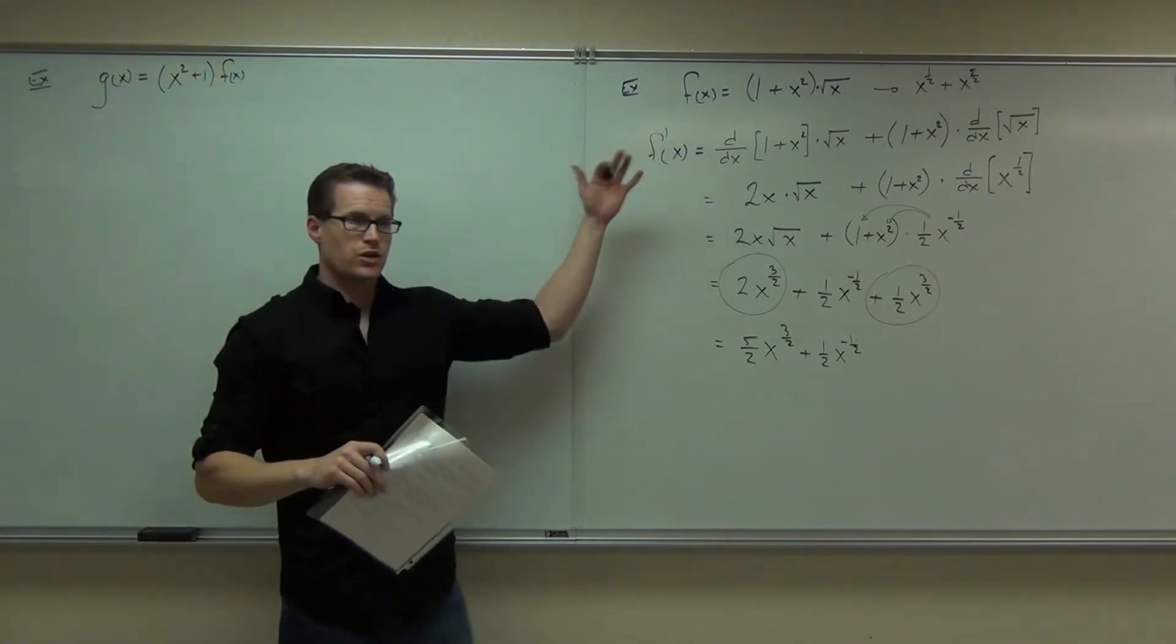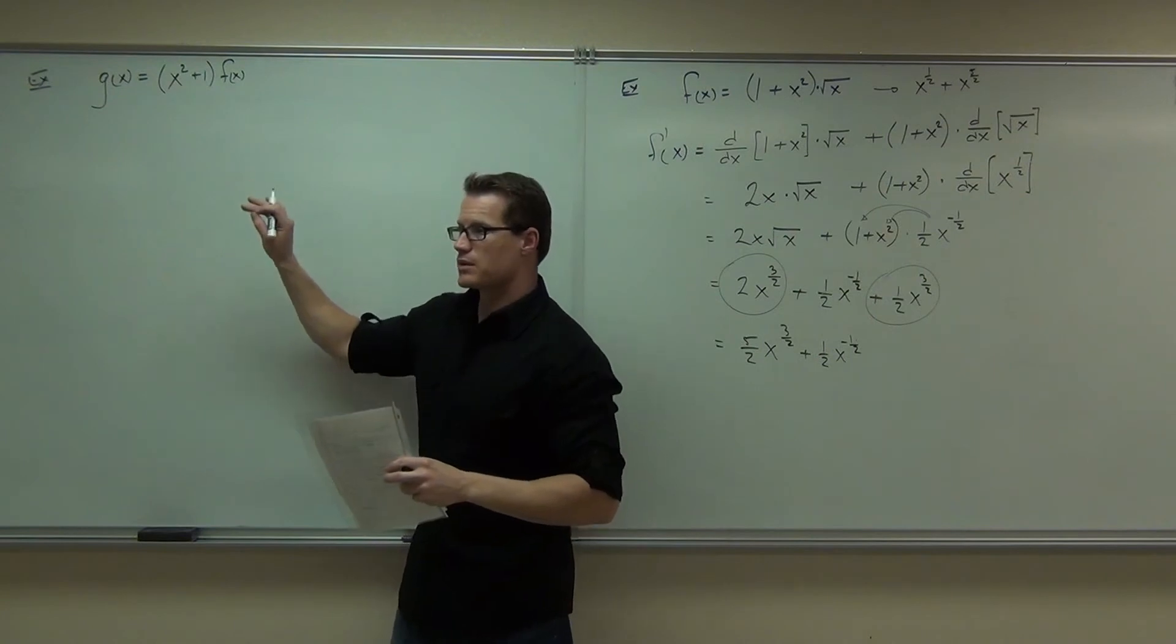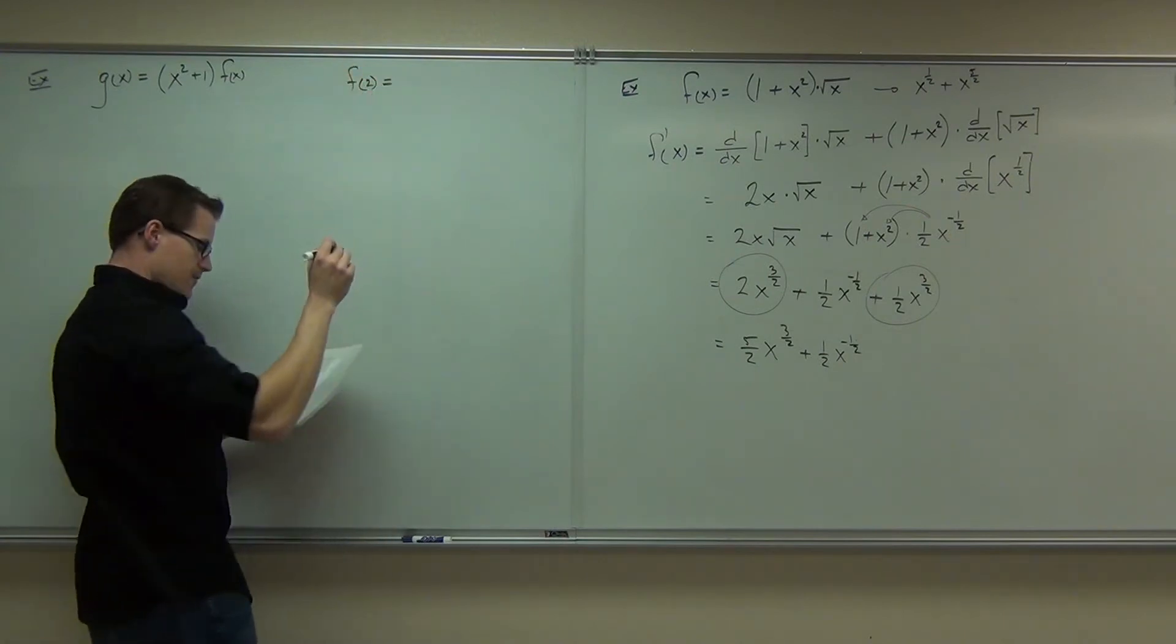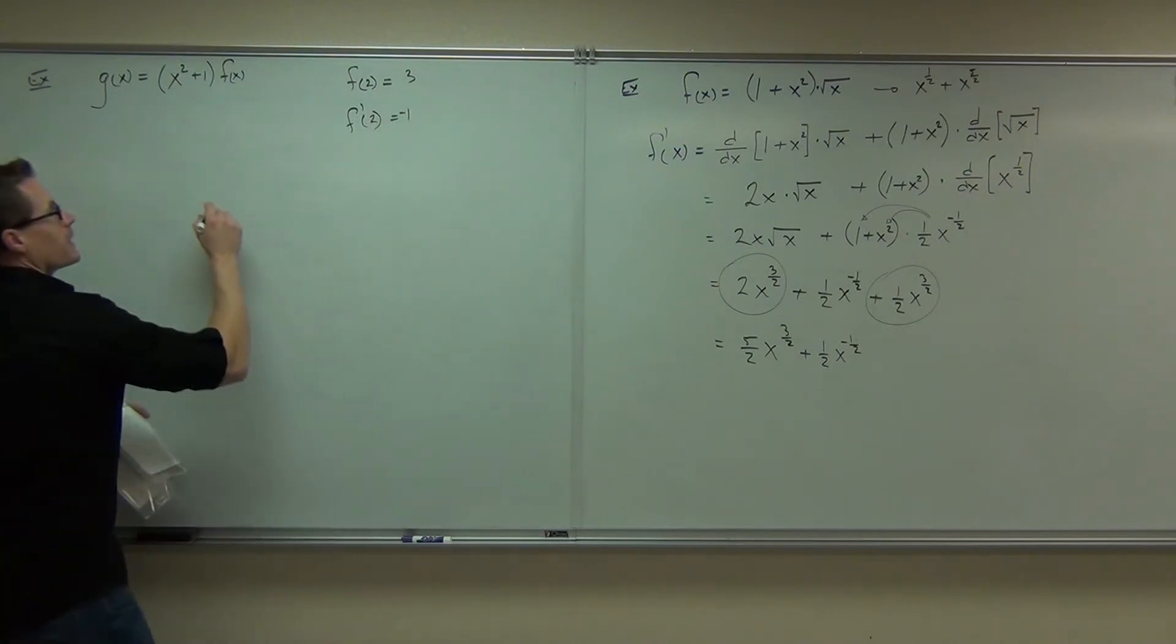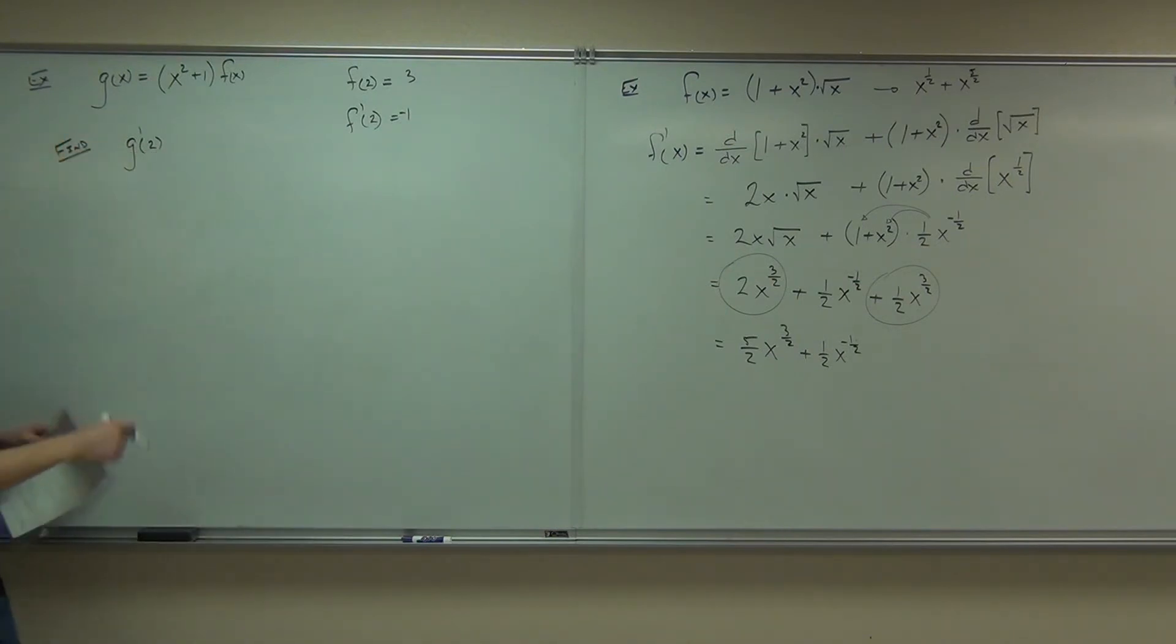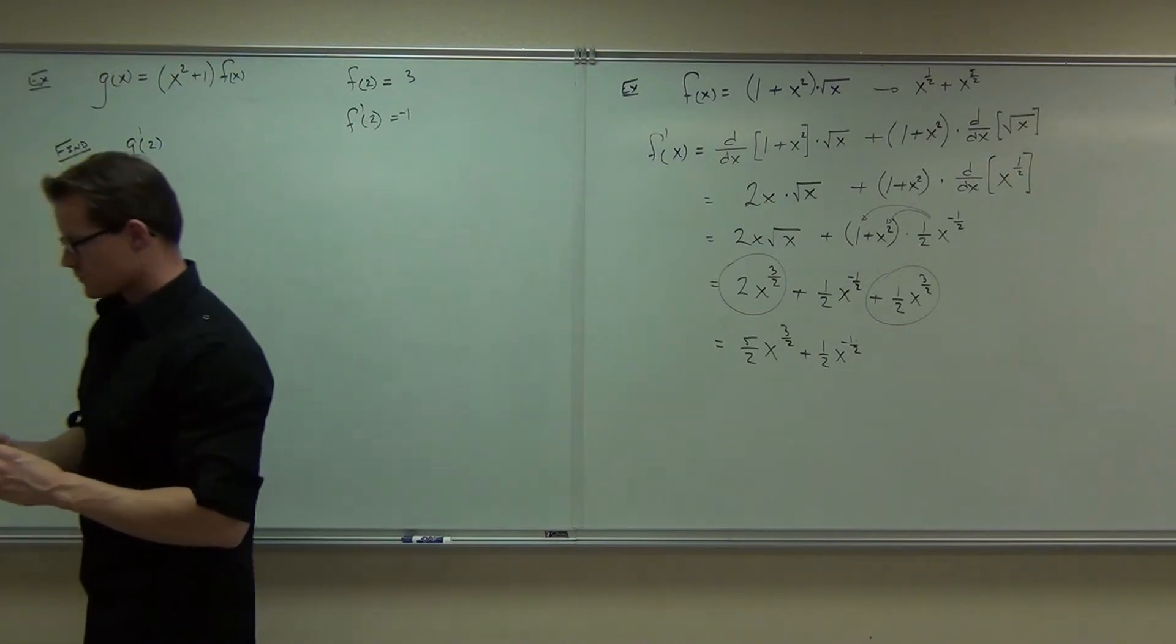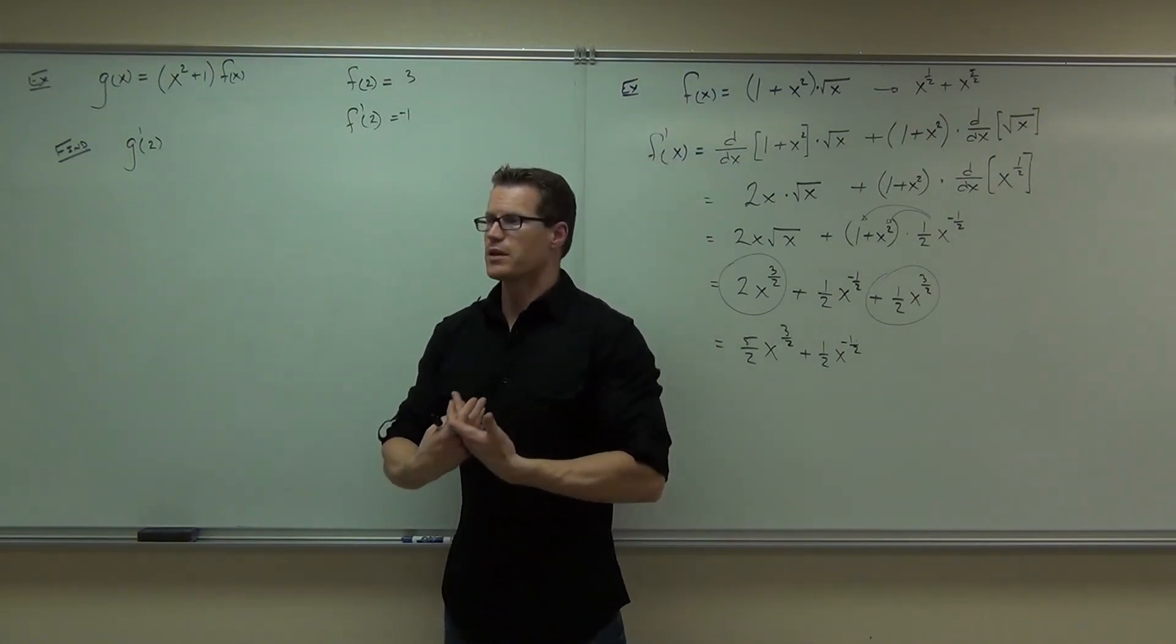You see, before, you could have gotten around this problem without doing the product rule. You could have gotten around this problem. This one, you might still be able to do that. However, it's going to be a little bit easier if you do the product rule with it. The idea is, what if you have this, and I tell you only two things about it. I say f of 2 is 3, f prime of 2 is negative 1, and I say find g prime of 2. That's my goal.